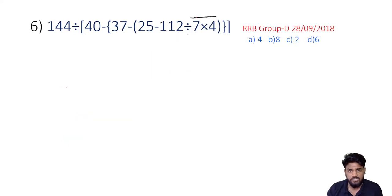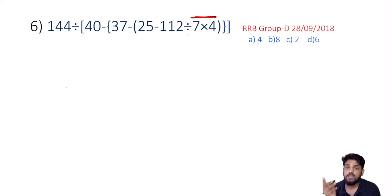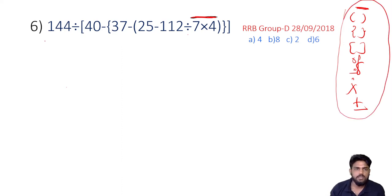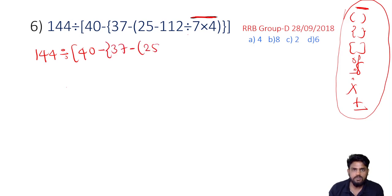This question is really important, so let's start off. First part of the question — this is an important format. 144 and 144, we will put this systematically — the same thing we will put 37 minus 25 minus 112 divided by 7 into 4. This 112 is 112 divided by 7, giving 4 times 28.